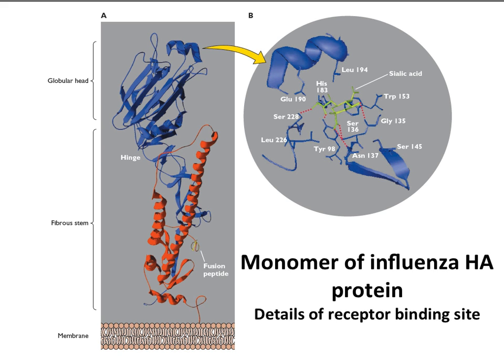Here's the crystal structure — the X-ray structure — of the hemagglutinin of flu. This is a glycoprotein on the surface of the particle that attaches to the cell receptor. It's a transmembrane protein embedded in the viral membrane, with a fibrous stem and at the top a globular head. The head contains the sialic acid binding site. Here is a structure of sialic acid in yellow bound in the head of the hemagglutinin — we know exactly how it sits in there and all the interactions between the sialic acid and specific amino acid residues.